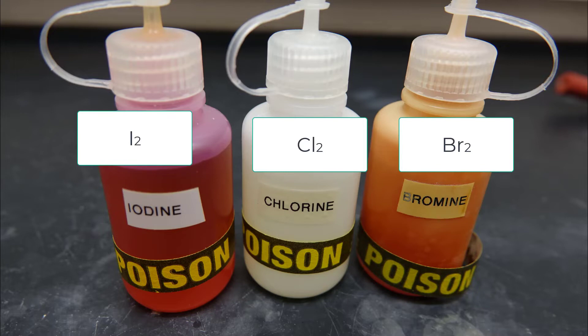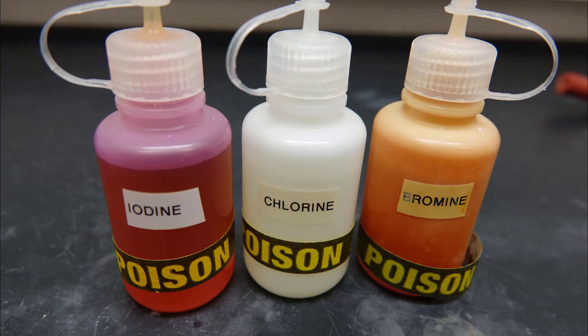Make sure to know which halogen is which color. The iodine is pinkish purple, you can see that up at the top. The chlorine is pretty colorless and the bromine is orange.